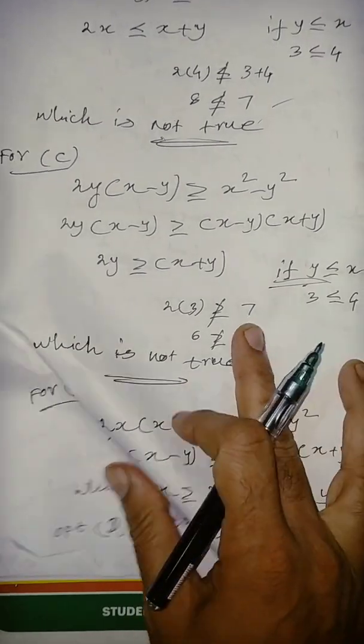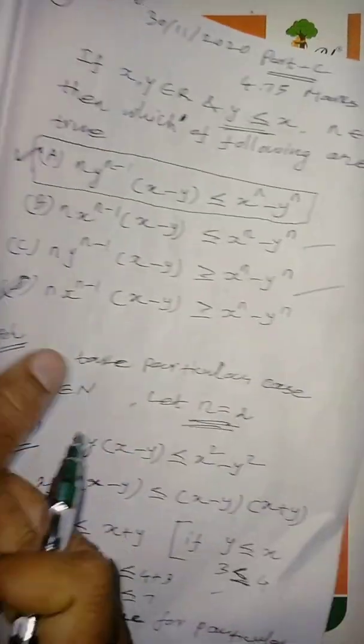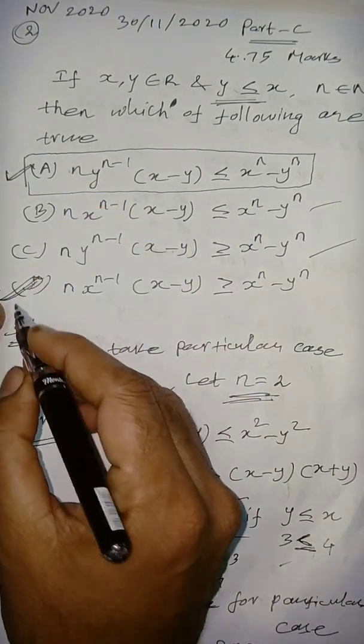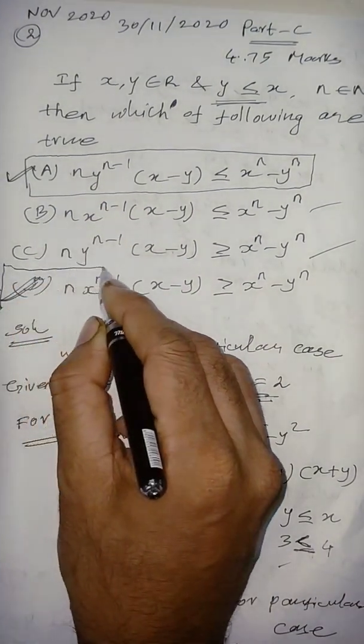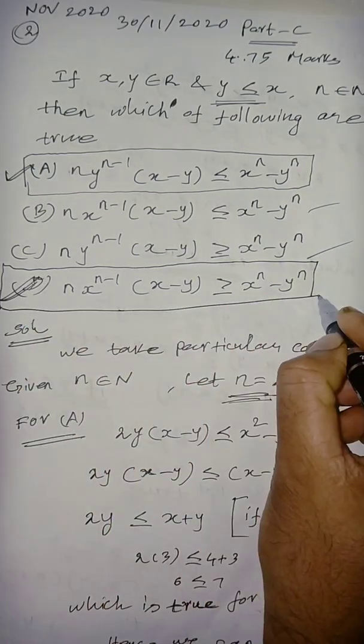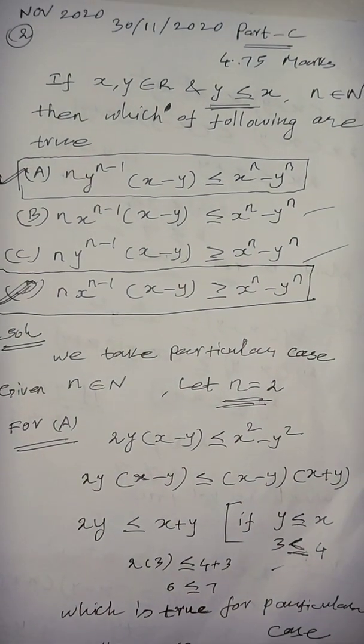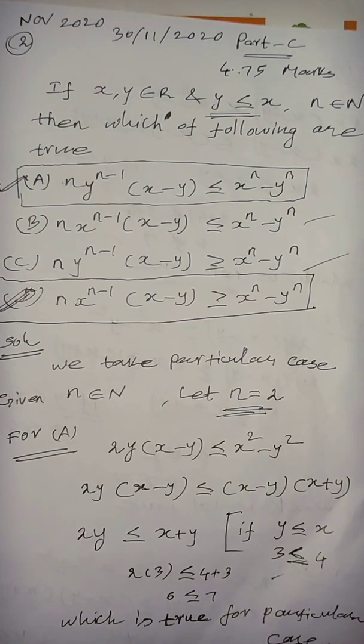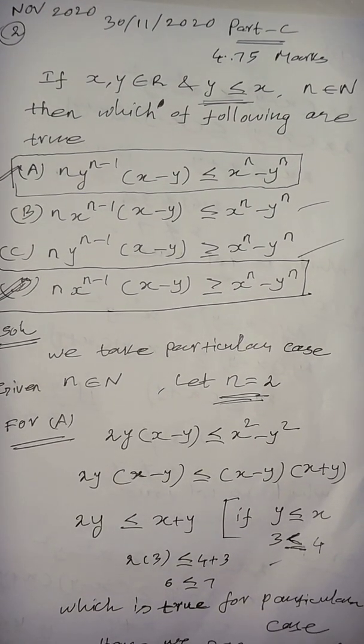So, in this question, the correct option is, it is a very easy one, option A and option D. So, you can take easy, 4.75 mark in part C. Okay, thank you very much for watching the full video, non-ring.